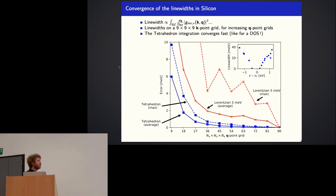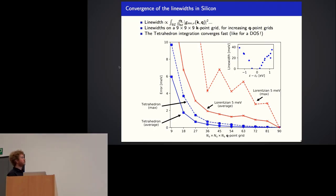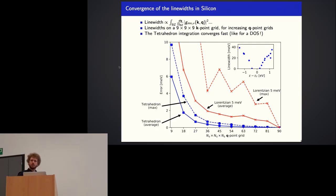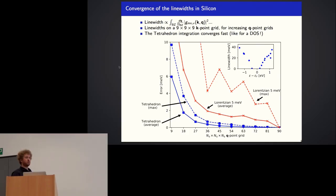To compute the linewidth, we integrate over the phonon wave vectors using a Q point grid, increasing the grid density until the linewidths are converged. The error on the linewidth as a function of grid size shows that the tetrahedron method converges much faster than the Lorentzian approach — the Lorentzian is not even converged yet. However, we still need 50×50×50 or 60×60×60 Q point grids, which is still quite dense.